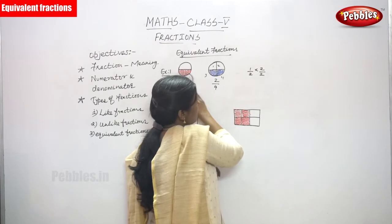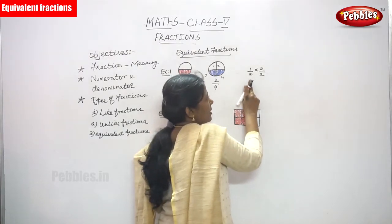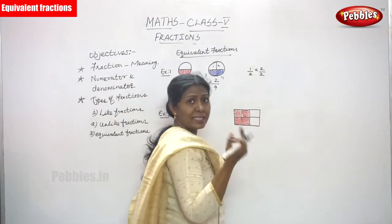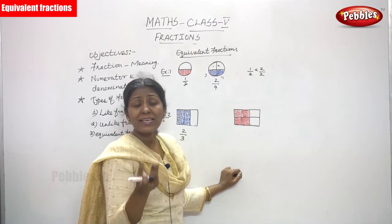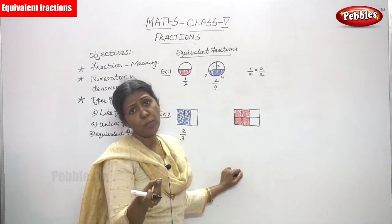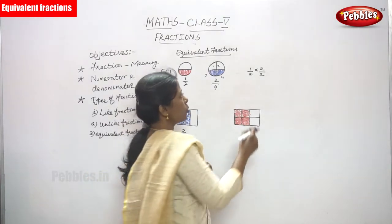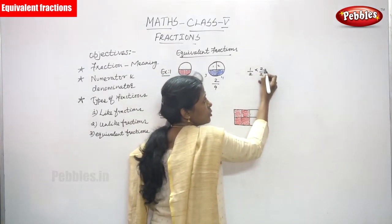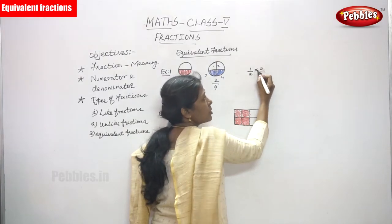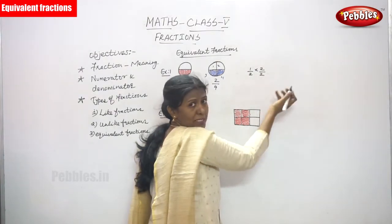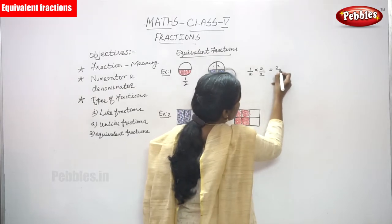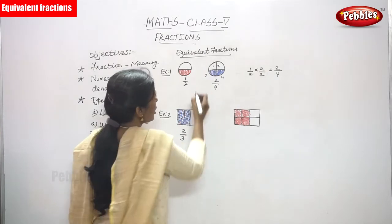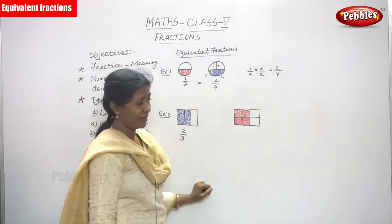The fraction of the first circle is 1 by 2 and the fraction of the other circle is 2 by 4. So 1 by 2 multiplied by 2 gives 2 by 4. The numerator 1 multiplied by 2 and the denominator 2 multiplied by 2 gives the answer 2 by 4. So 1 by 2 is equal to 2 by 4 — this is called an equivalent fraction.